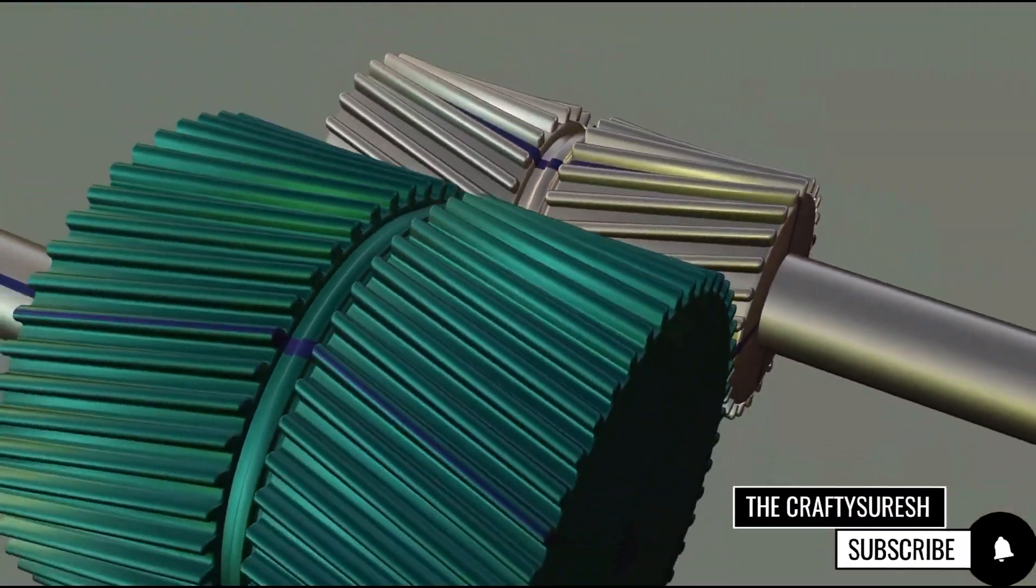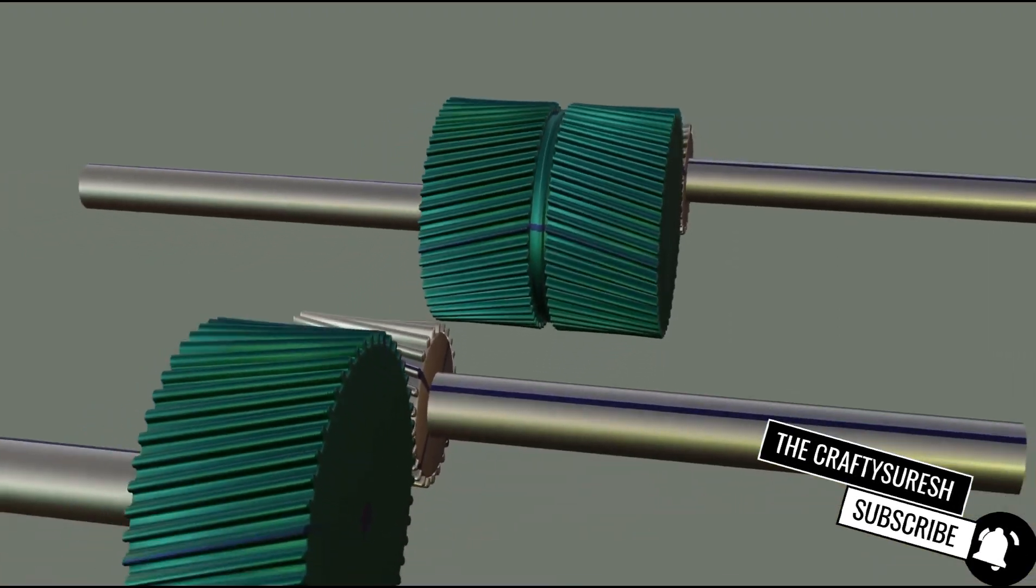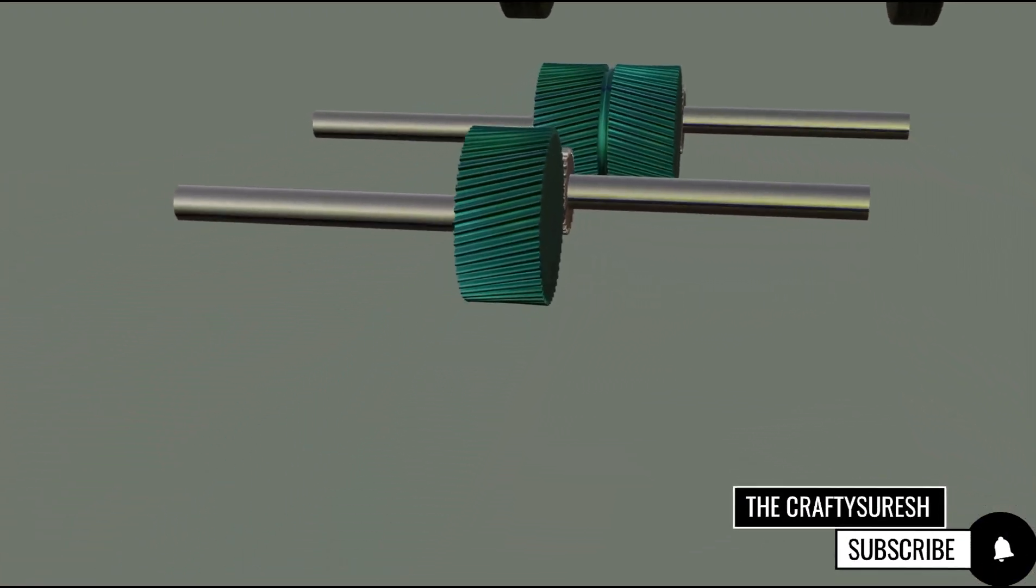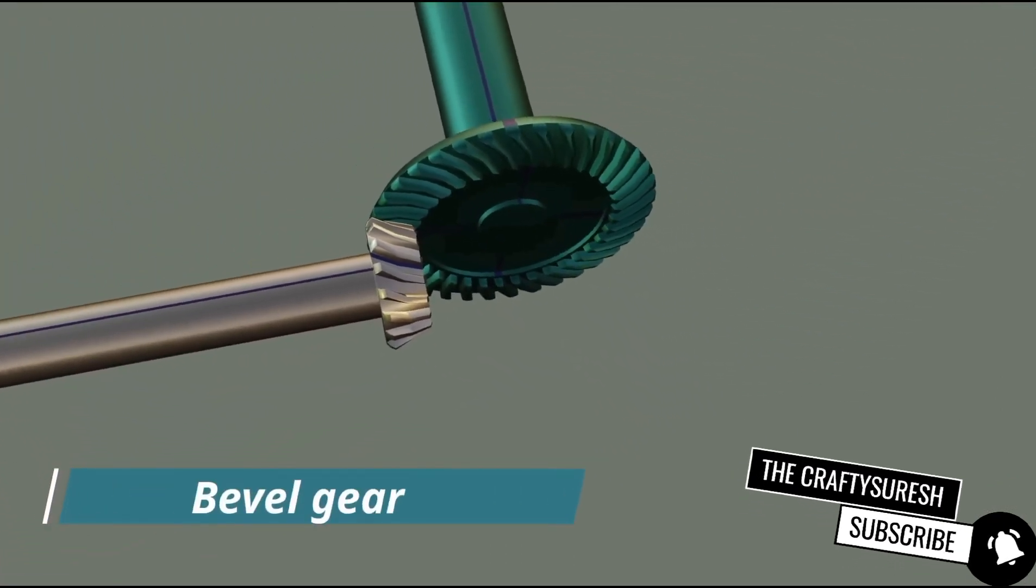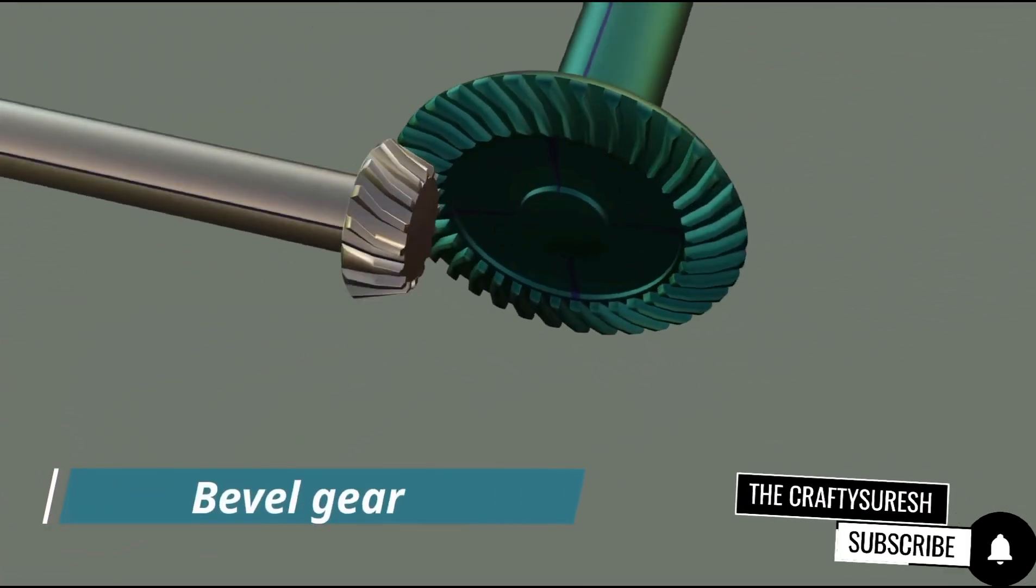All the gears we have seen so far, all transfer power in parallel. That is, the shafts of the gears should be parallel to each other. So when power is to be transferred at any angle, the bevel gear is used.